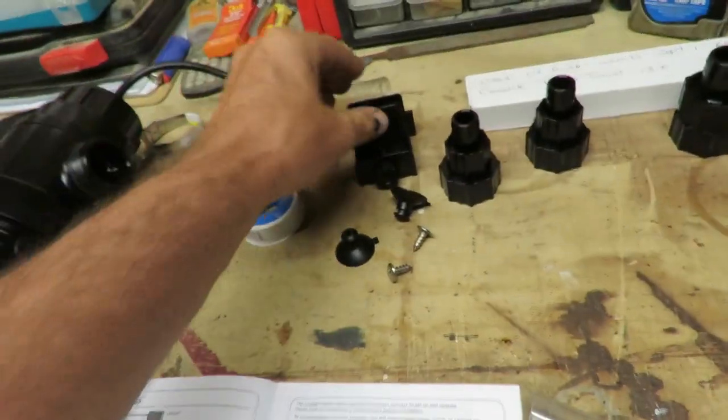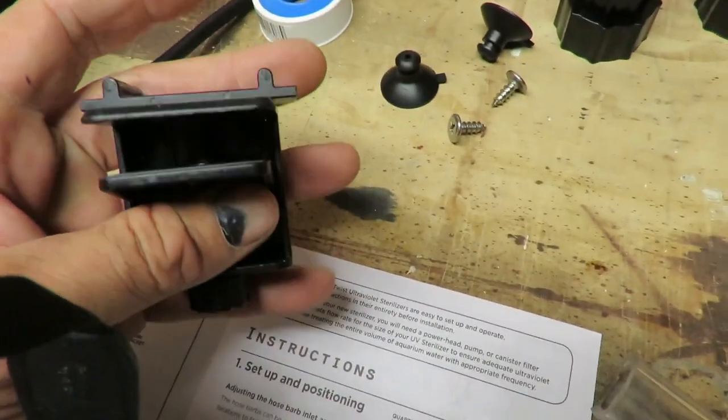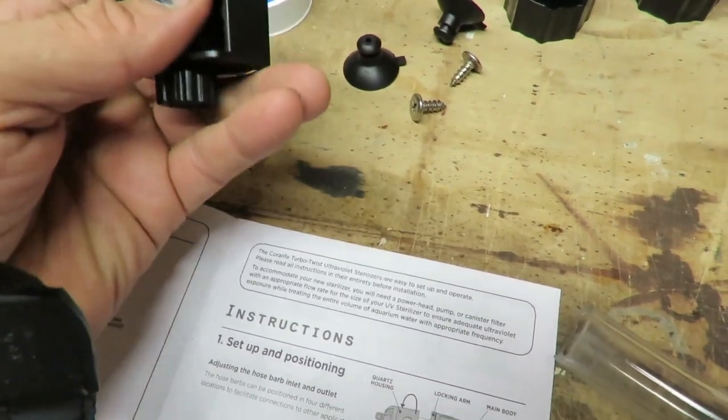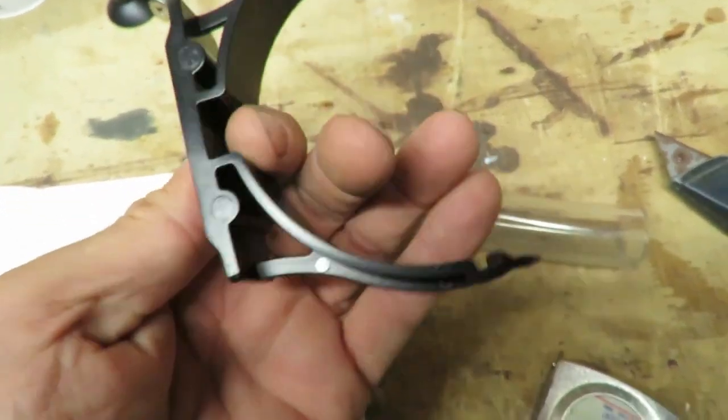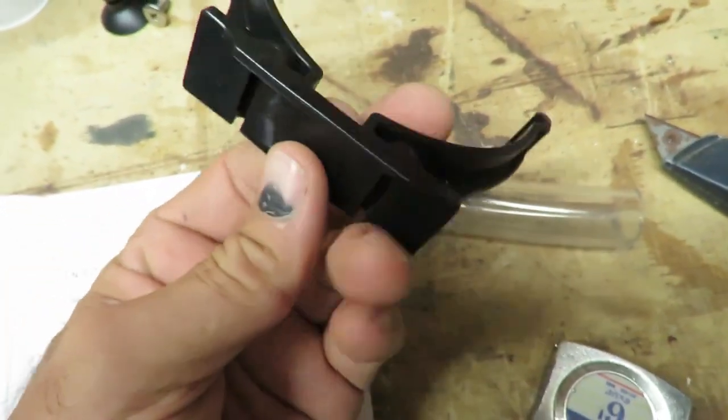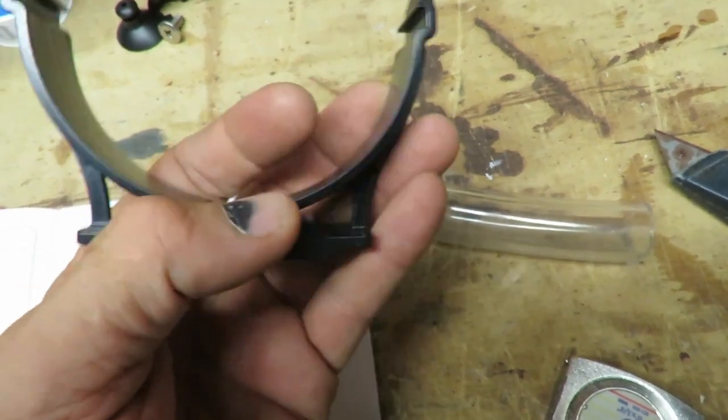The other thing you can do - it does come with a bracket here that you can mount this on the edge of the tank. I will not be doing that. It has these holders here which I do use, and you can actually put the suction cups on or whatever, but we'll see how those work.